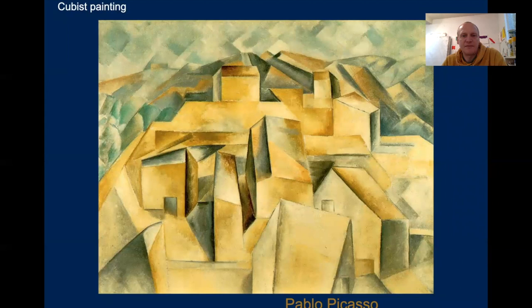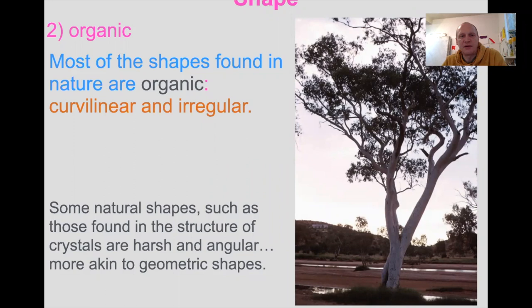The other type of shape is organic. Most of the shapes found in nature are organic — usually curvilinear and irregular. Some natural shapes like those in the structure of crystals are harsh and angular, so more geometric. But most of the organic shapes we see are curvy and irregular.